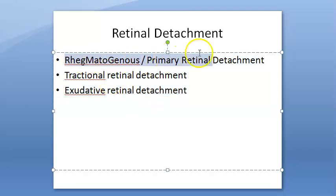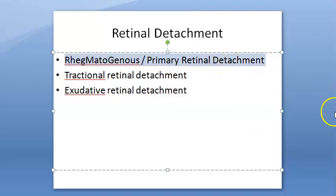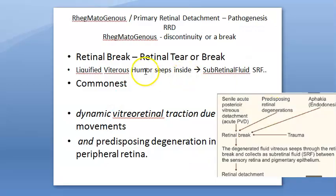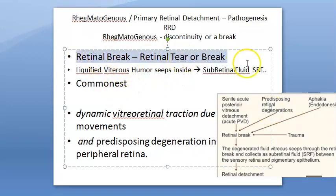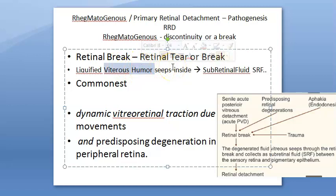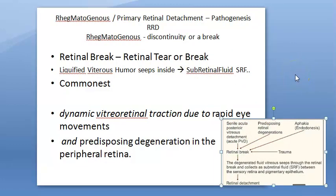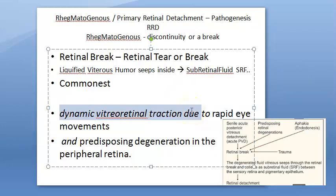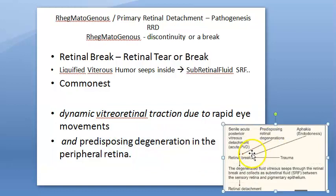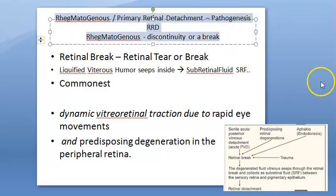There are three types of retinal detachment: regmatogenous or primary retinal detachment, tractional retinal detachment, and exudative retinal detachment. Regmatogenous primary retinal detachment is the most common type. Here, there is a retinal break. The vitreous humor, which is normally very gelatinous, will liquefy and seep through this retinal break, going into the space between the pigment epithelium and the other layers — forming subretinal fluid. This occurs due to rapid eye movement in people with aphakia, myopia, pseudophakia, trauma, or dynamic vitreo-retinal traction.